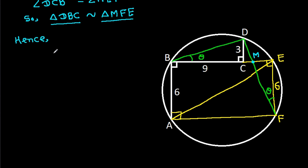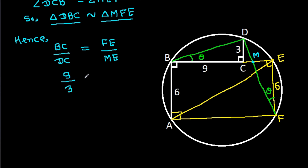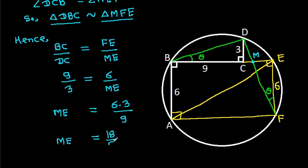So triangle DBC will be similar to triangle MFE. Hence BC by DC will be equal to FE by ME. BC is 9 and DC is 3, and FE is 6 by ME. So ME will be equal to 6 times 3 by 9, which is 18 by 9. That will be 2. So we get ME is 2.